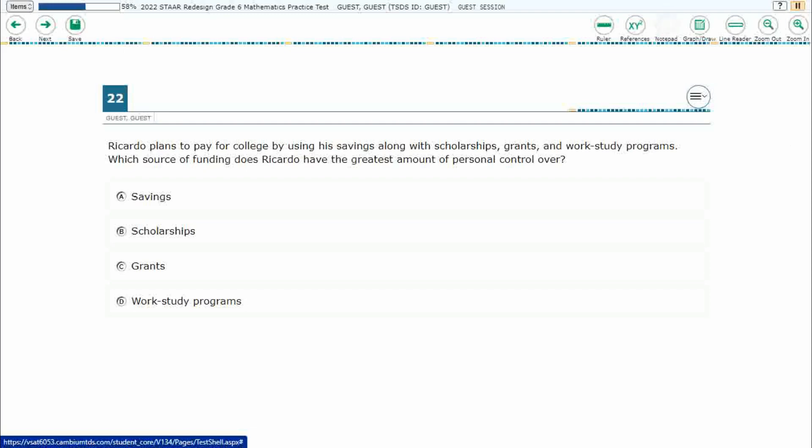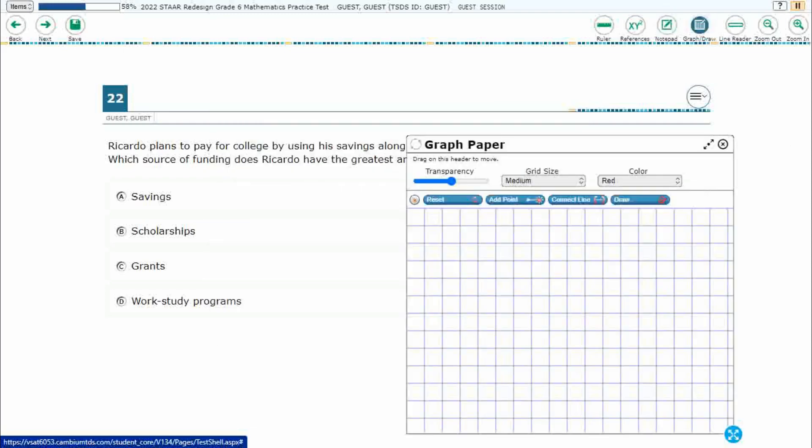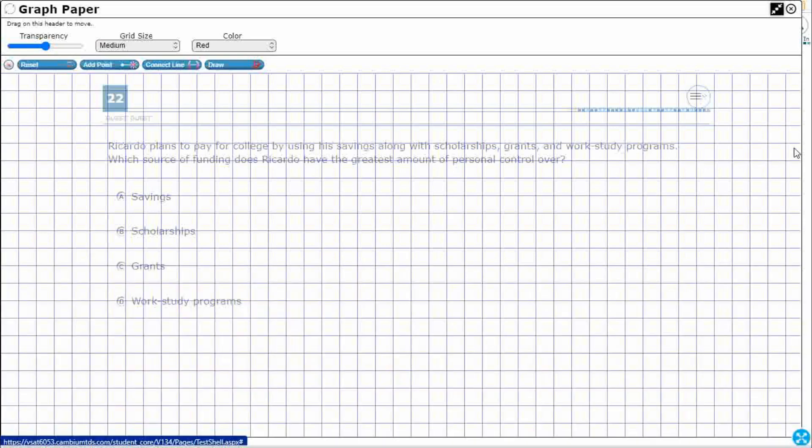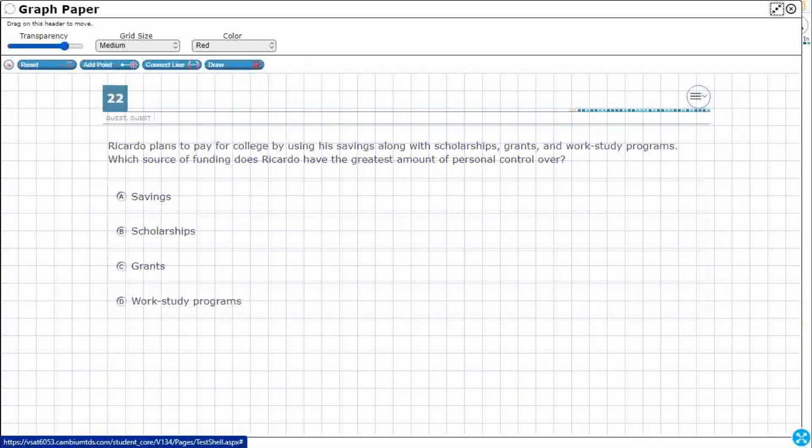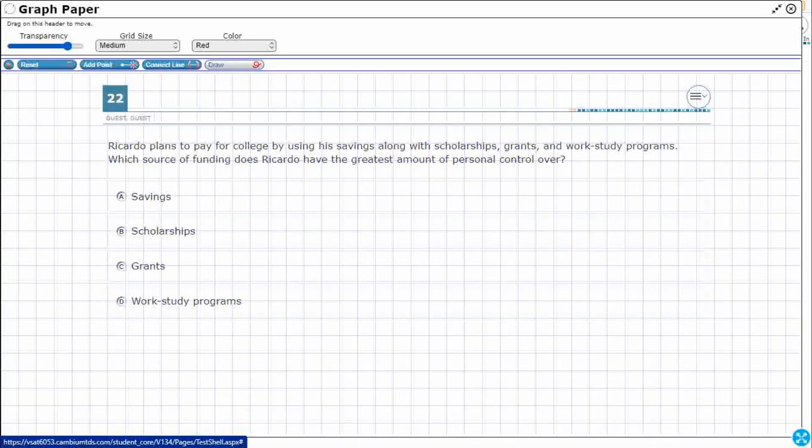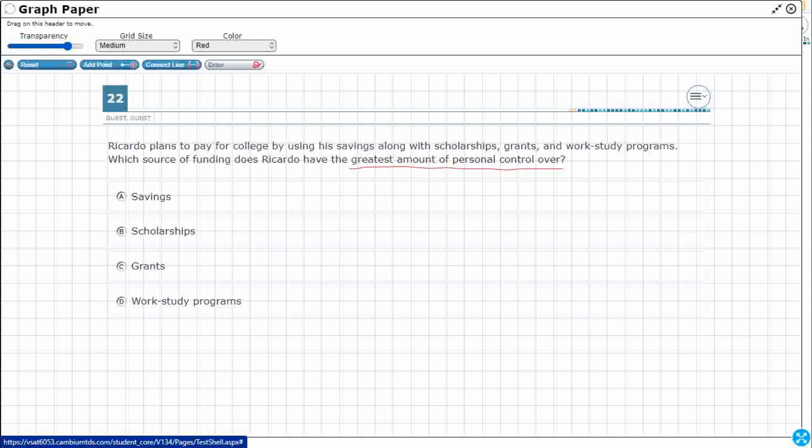That's a good question. Let's open up our graph draw feature and let's look at these four options. We're really looking at what do they do and we're looking for the greatest amount of personal control. So what does he get to decide in these? Alright, so let's see what these are.